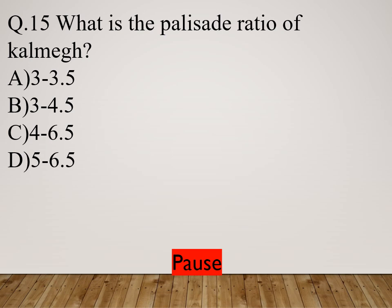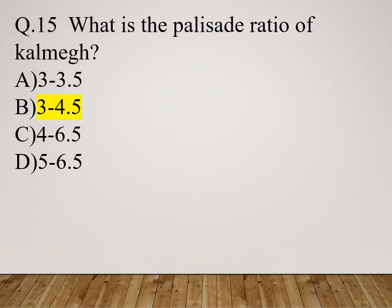Question 15: What is the palisade ratio of Kalmegh? Option A: 3 to 3.5. Option B: 3 to 4.5. Option C: 4 to 6.5. Option D: 5 to 6.5. The right answer is 3 to 4.5. So the palisade ratio of Kalmegh is 3 to 4.5.